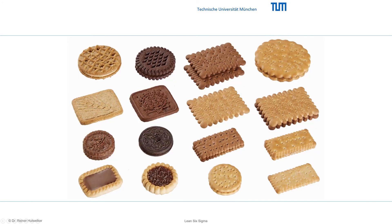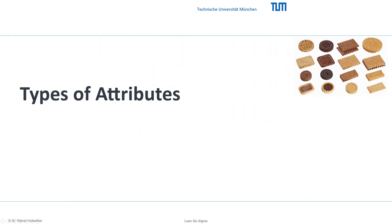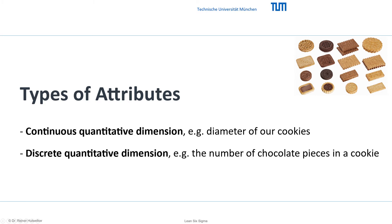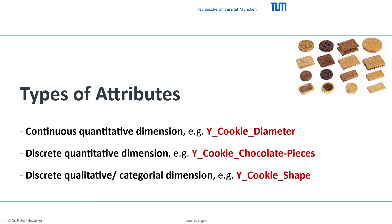The different states an attribute can take determines its type. There are three types of attributes that we can model by corresponding dimensions. Continuous quantitative dimension — for example, the diameter of our cookies. Discrete quantitative dimension — for example, the number of chocolate pieces in a cookie. Discrete categorial dimension — for example, the geometrical shape of our cookies. To specify the attributes of an output, its variable can be indexed accordingly: y-cookie-diameter, y-cookie-chocolate-pieces, and y-cookie-shape.